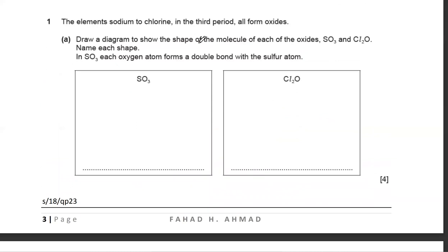Now for SO3: sulfur has six electrons, and the oxygen atoms are making double bonds. Sulfur is making three double bonds, so all six electrons are used up — there are no spare electrons or lone pairs left. That's going to be fan-shaped with three bond pairs. Always consider a double bond as one entity since the electrons are together.